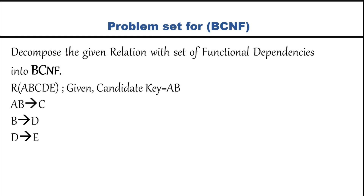The problem statement is simple: decompose the given relation with a set of functional dependencies into BCNF. When this kind of problem is given, mostly you will have a candidate key given in the problem itself. As a caution, always verify the candidate key. Given candidate key is AB. Verifying with closure: AB gives AB, then C, then D, then E — so the candidate key is correct.